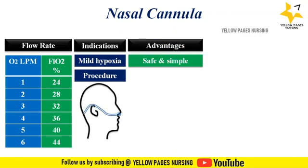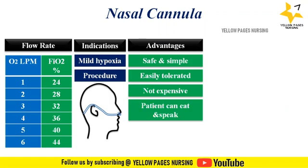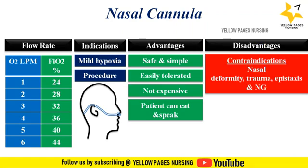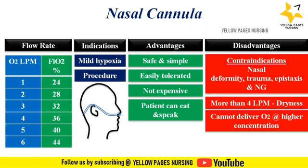It is easily tolerated by patients, it is not expensive, and patients can eat and speak while wearing a nasal cannula. Disadvantages include that nasal cannulas are contraindicated in case of nasal deformity, trauma, congestion, epistaxis, and in the presence of a nasogastric tube. When oxygen is administered at more than 4 liters per minute it may lead to dryness of the mucous membrane. Nasal cannulas cannot deliver oxygen at higher concentrations and are not good for mouth breathers.